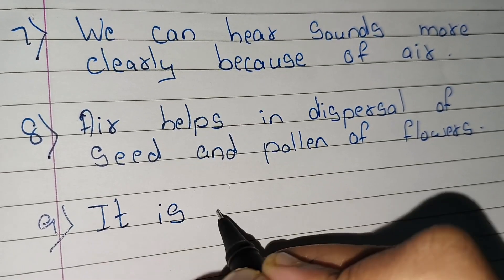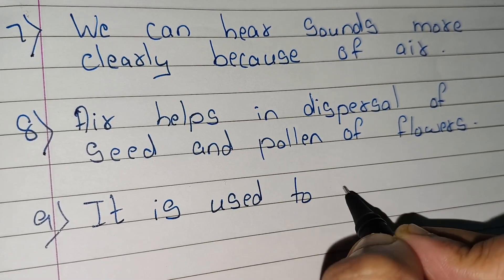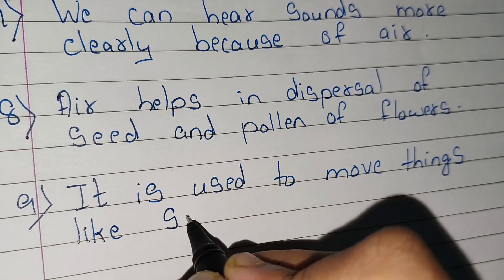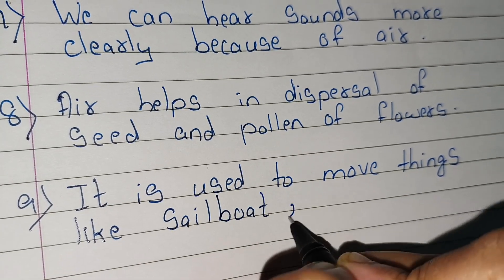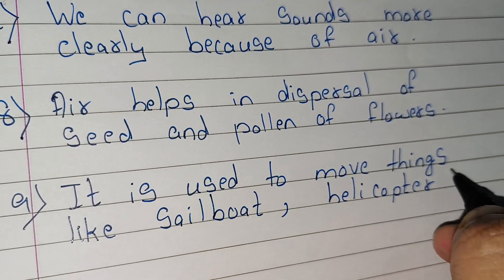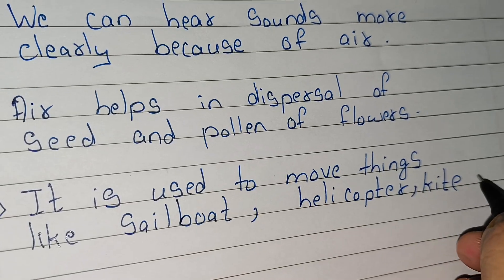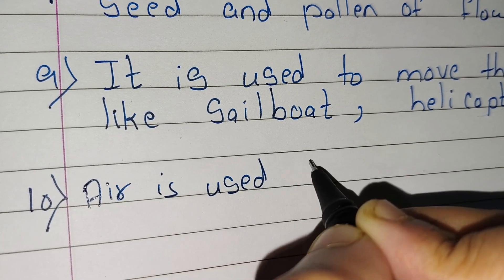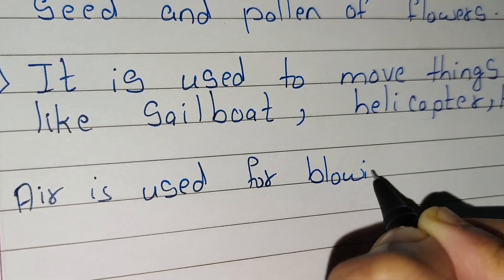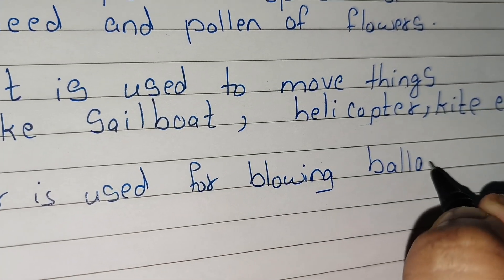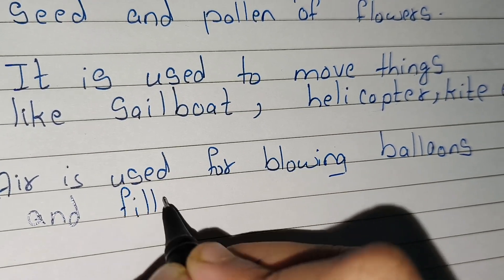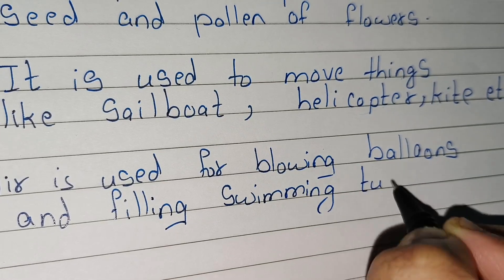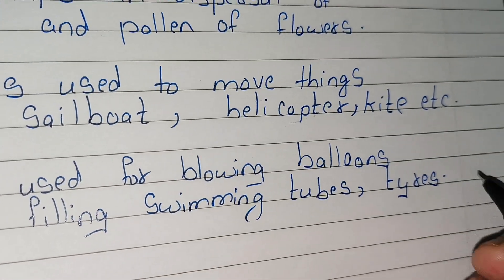Ninth point, it is used to move things like sailboats, helicopters and kites. Point number 10, air is used for blowing balloons and filling swimming tubes and tires. Thank you friends.